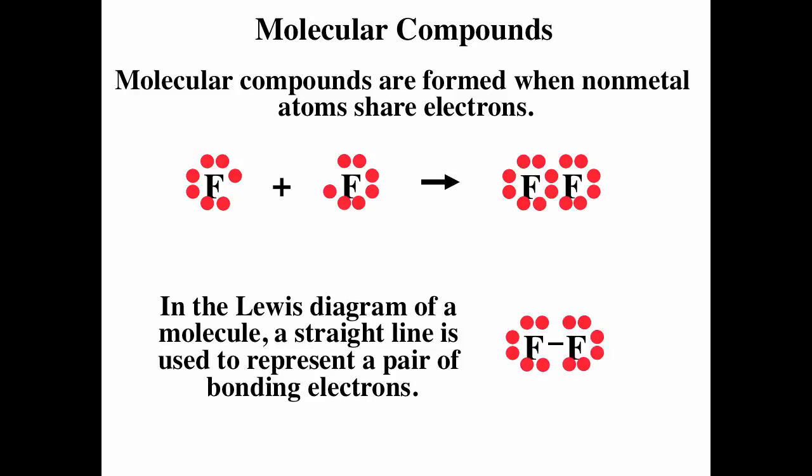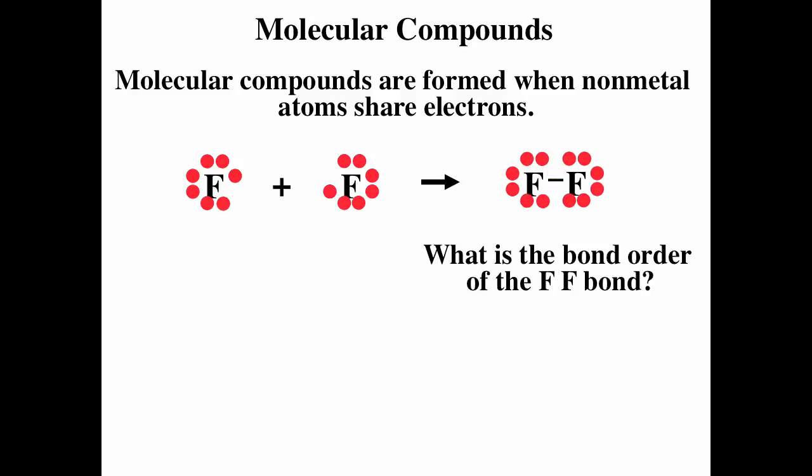Typically we draw a single line for each pair of bonding electrons, so this single straight line represents those two electrons. The two electrons being shared are bonding electrons; the electrons not being shared are unshared electron pairs or lone pairs. Bond order is the number of pairs of electrons being shared, and each line represents a pair of electrons. For fluorine, you have a bond order of one, which corresponds to a single bond.